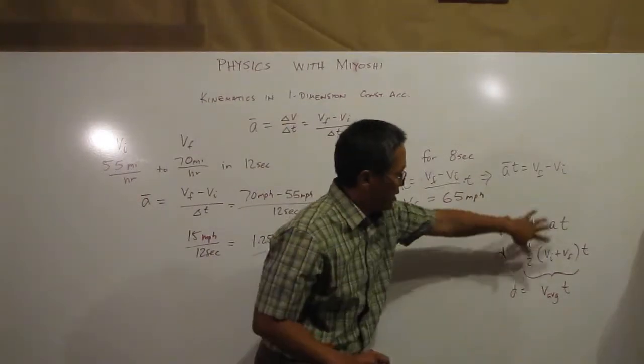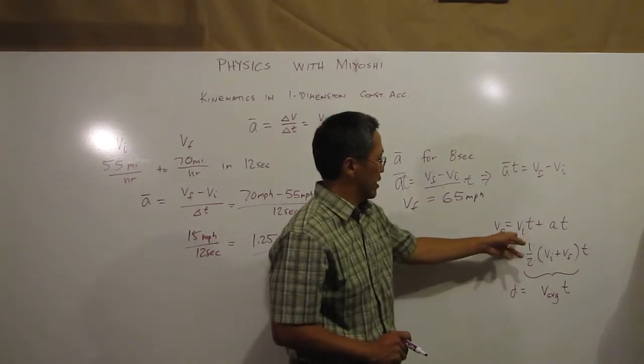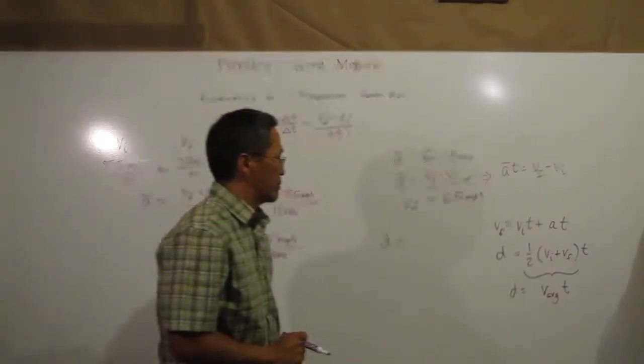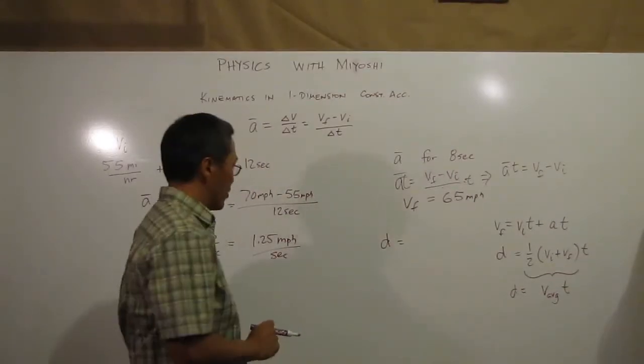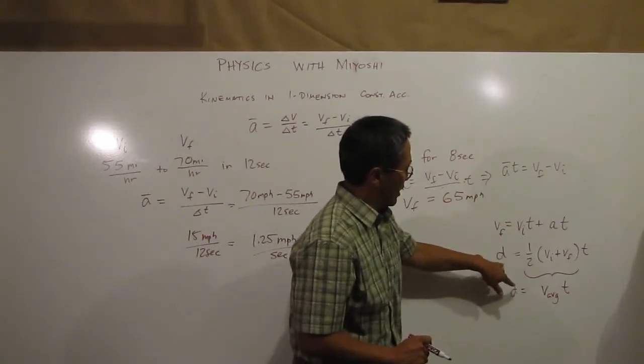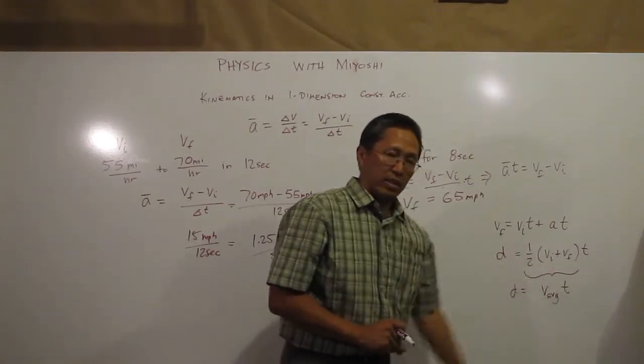Well that's a different set of equations. I can actually rearrange these equations or play around with these guys and find out my final velocity is V initial times time plus A times the time, acceleration times the time. But the easier equation to look at is D is my average velocity times the time.